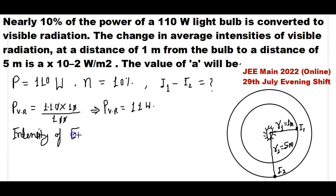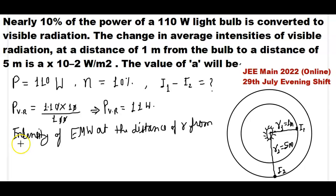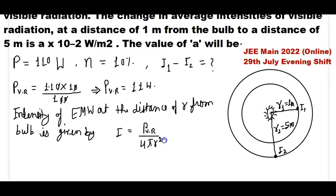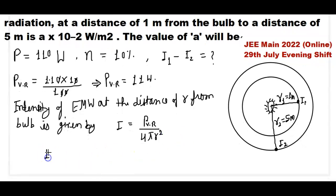The intensity of electromagnetic waves at a given distance is equal to the power of visible radiation divided by 4π r squared, where r is the radius of the sphere. Putting in values, I1 — the intensity of visible radiation at a distance of 1 meter from the bulb — is given by power of visible radiation, which is 11, divided by 4π r1 squared, with r1 equal to 1 meter.